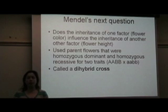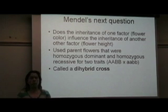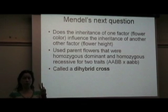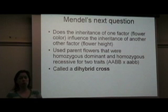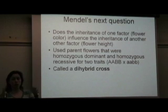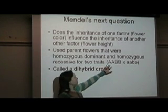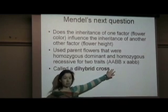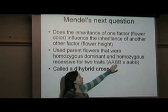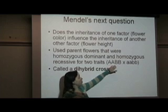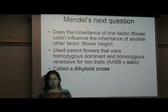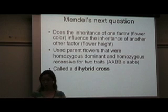When writing about the dihybrid cross, we want to make sure that we have four letters. Remember if we had one trait, we used two letters — now we have two traits, so we're going to have four letters, and each trait is going to have a different letter. The A's are always first and the B's are always second, so you want to be consistent with that. Our diploid organisms have four letters in their genotype, and when we make gametes, each gamete will have two letters.